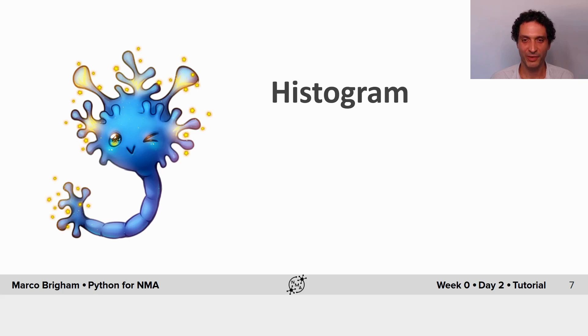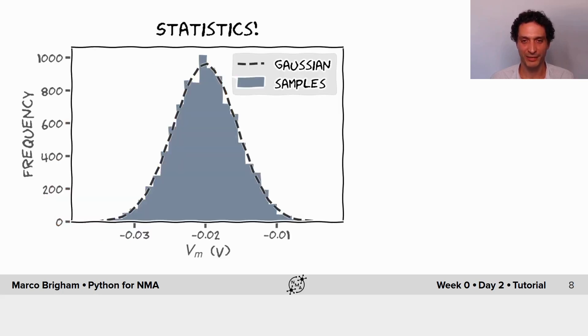Histograms. Histograms are popular plots in statistics where we have a random variable that we are measuring, so we assume that each sample comes from the same distribution, so from the same process that is generating the data, the samples.